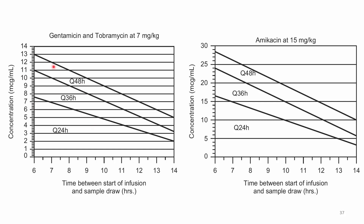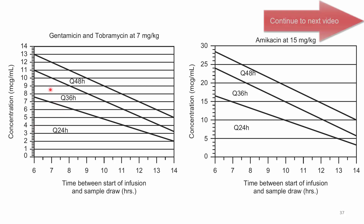This nomogram was established by Nicolaou and colleagues, who trialed this dosing in their patients and obtained a peak of 20, because the most common MIC at their institution was 2. They wanted a peak-to-MIC ratio of 10 — so 20 divided by 2 equals 10. They then observed how quickly patients were clearing aminoglycosides, and that is how they derived the dosing lines in the nomogram.